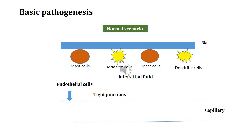Before we understand the changes in inflammation, let us first understand the normal scenario. Here in blue you see an intact skin, and beneath that I have shown mast cells in brown and the dendritic cells in yellow. As soon as this layer of defense in the form of skin gets breached, the dendritic and mast cells have a role in immune response by activating helper T cells. Between the cells is the interstitial fluid.